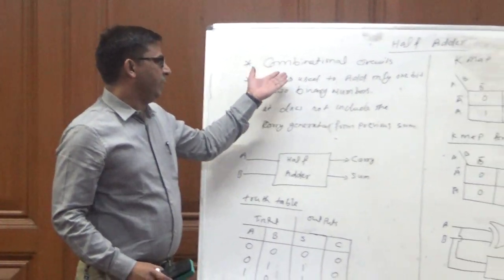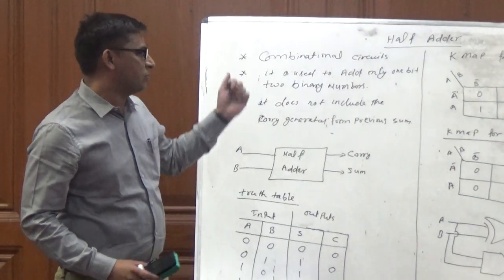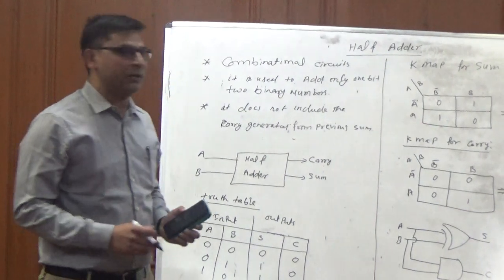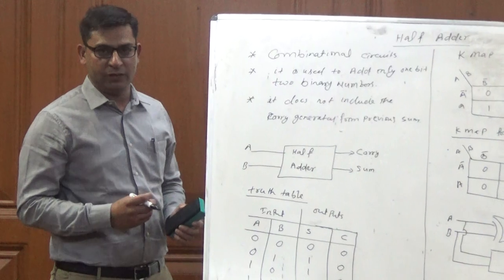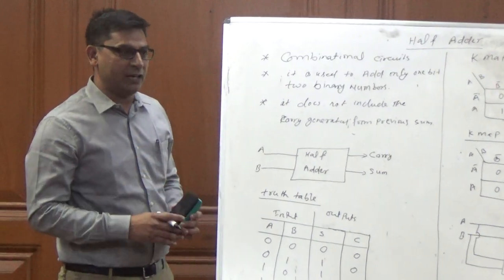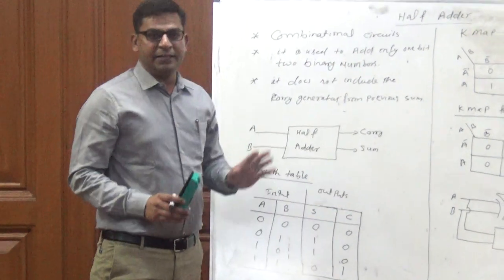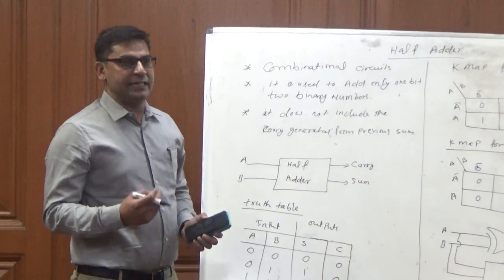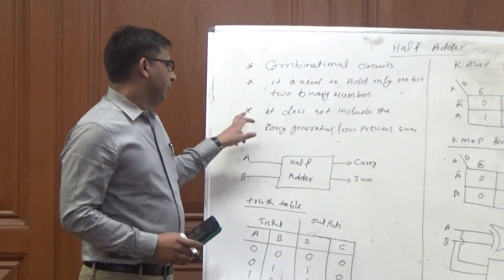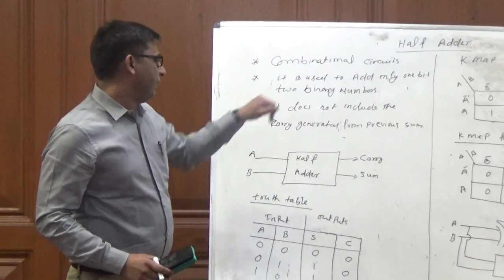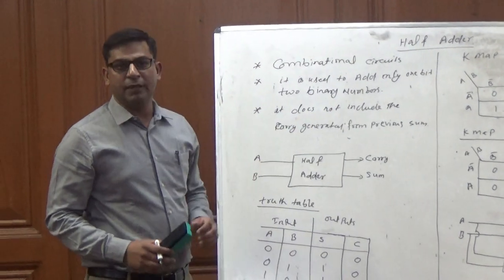Half-adder is a very important topic for digital electronics. This comes into the category of combinational circuits because the output directly depends on the input. It does not depend on the previous output. It is used to add two 1-bit numbers at a time, but the drawback of this half-adder is it does not include the carry generated from the previous sum.